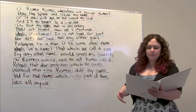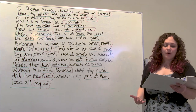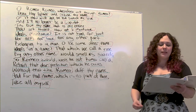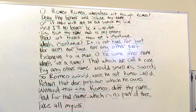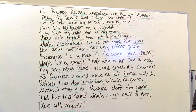Looking at the full text again, read it one more time since you have a better grasp on it. O Romeo, Romeo, wherefore art thou Romeo? Deny thy father and refuse thy name, or thou wilt not be but sworn my love, and I'll no longer be a Capulet. Tis but thy name that is my enemy. Thou art thyself, though not a Montague. What's Montague? Is it nor hand, nor foot, nor arm, nor face, nor any other part belonging to a man? O be some other name. What's in a name? That which we call a rose by any other name would smell as sweet. So Romeo would, were he not Romeo called, retain that dear perfection which he owes without that title. Romeo, doth thy name, and for that name which is no part of thee, take all myself.